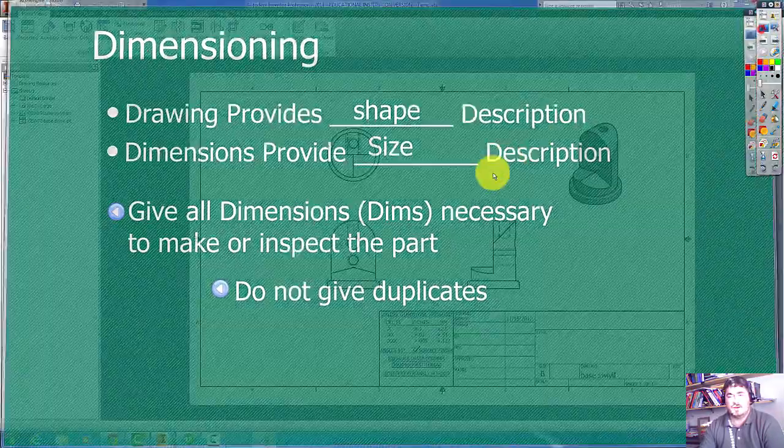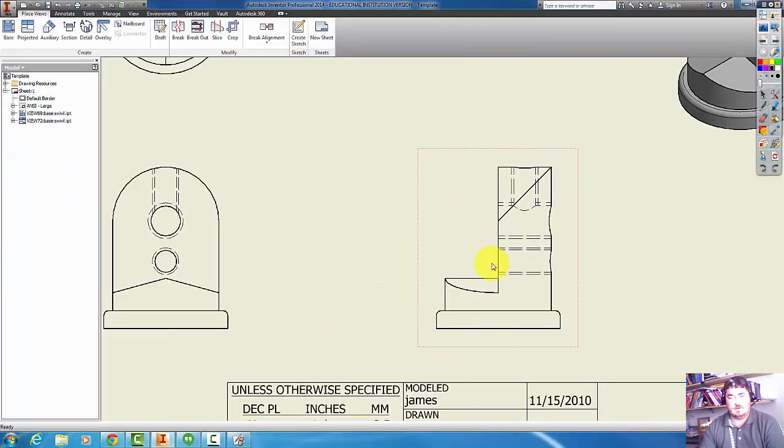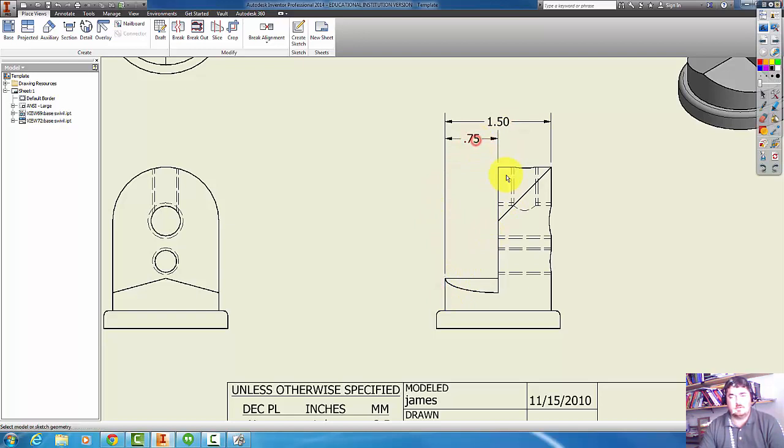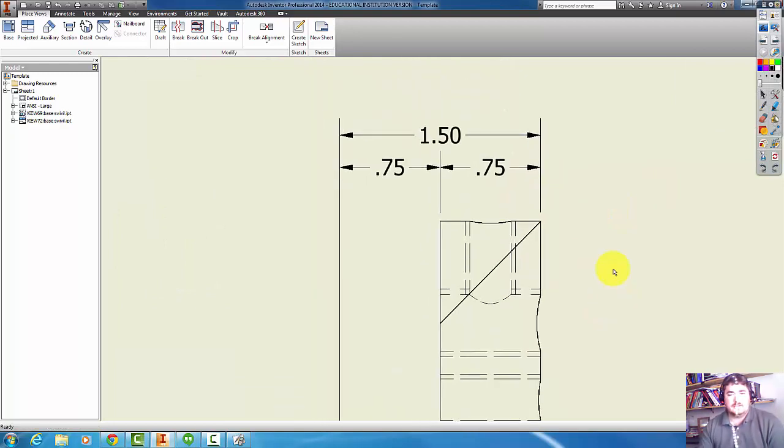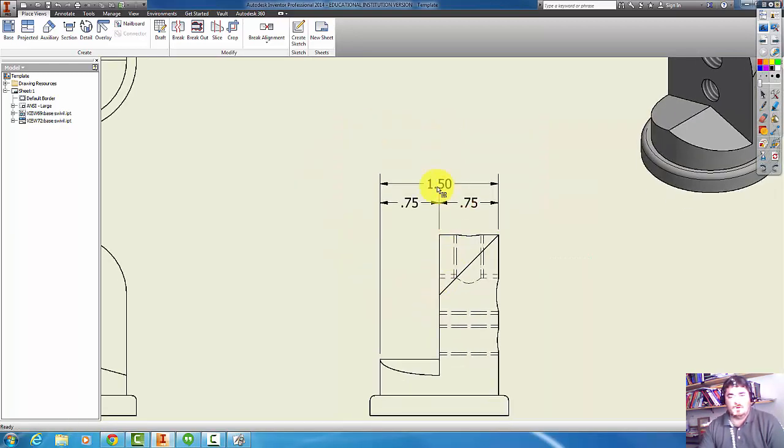If we go back to the part here and look at the width, the overall width is an inch and a half. The little cutout is three quarters, and that's three quarters. I don't really need all three of these dimensions to tell me how wide the part is, because if I have the inch and a half and then three quarters, that's just the difference between them.